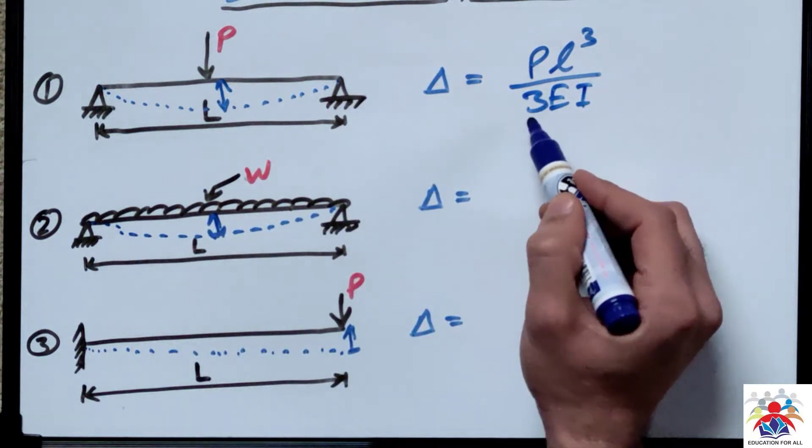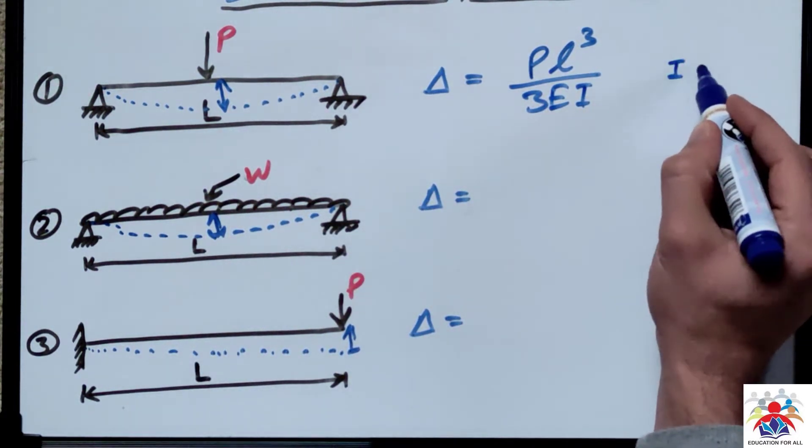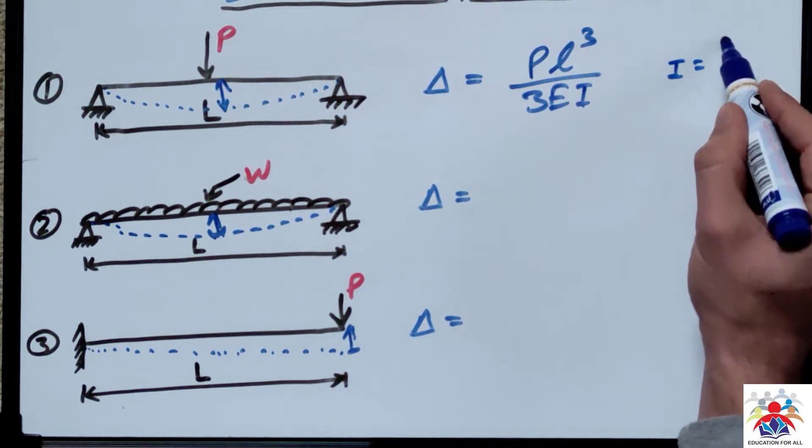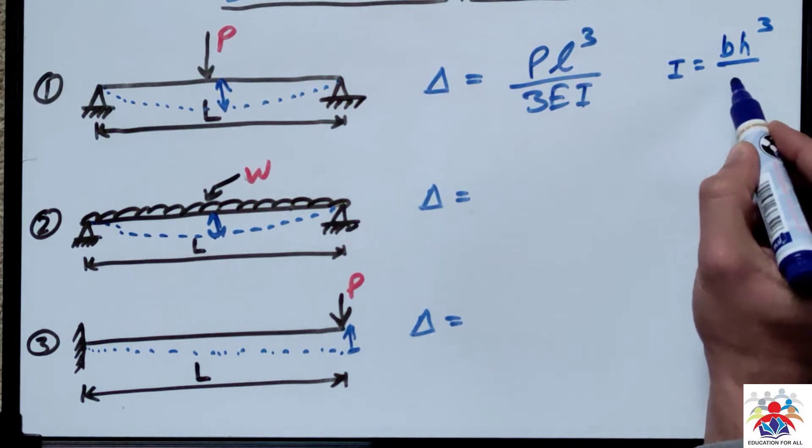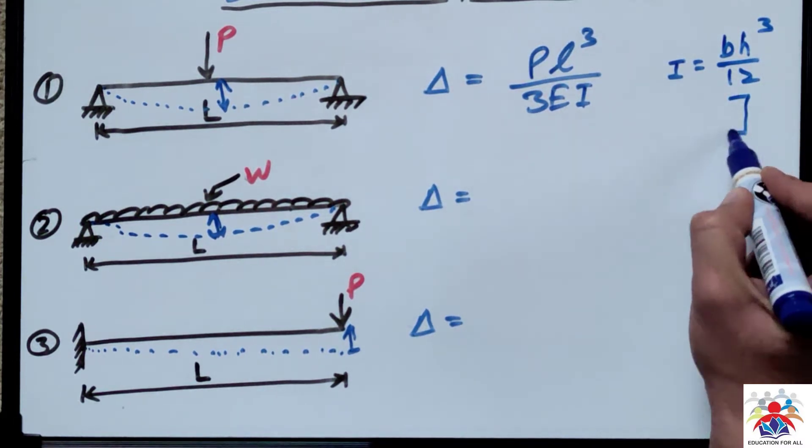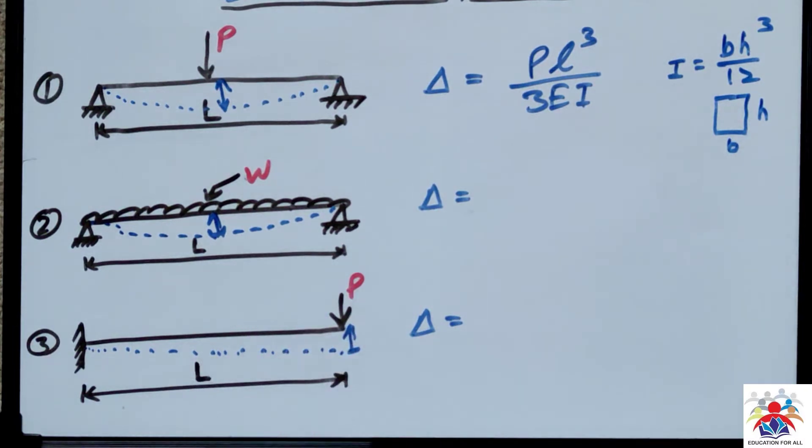P is a load, L is a length of the beam, 3 is a factor, E is Young's modulus, and I is a moment of inertia. For rectangular beam, moment of inertia would be bh cubed over 12. For example, this is our h, this is our b.